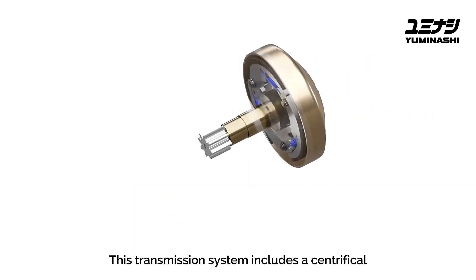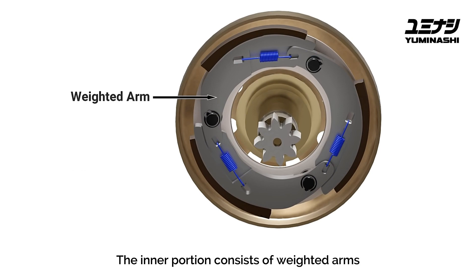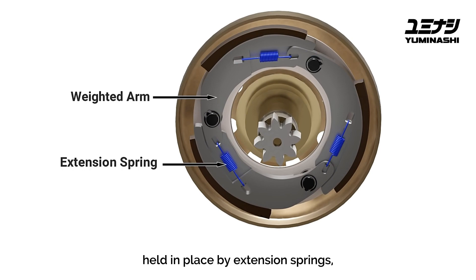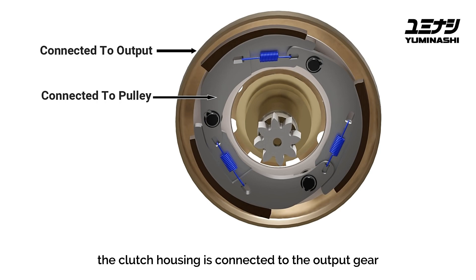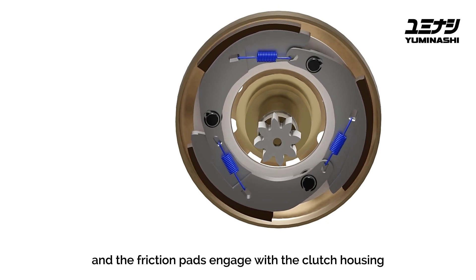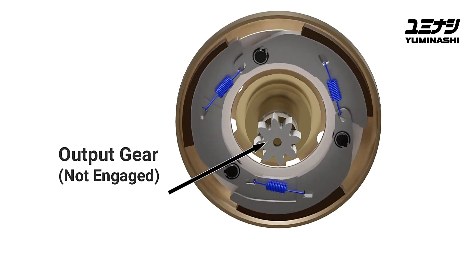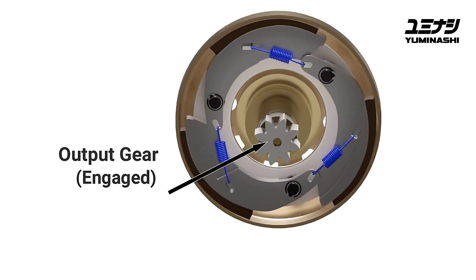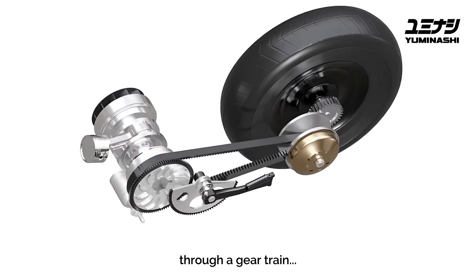This transmission system also includes a centrifugal clutch assembly. The inner portion consists of weighted arms held in place by extension springs. These arms are connected to the pulley, while the clutch housing is connected to the output gear. When sufficient speed is reached, centrifugal force causes the arms to swing outward and the friction pads engage with the clutch housing, which then transfers power to the rear wheel through a gear train.